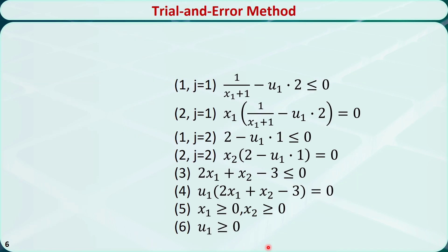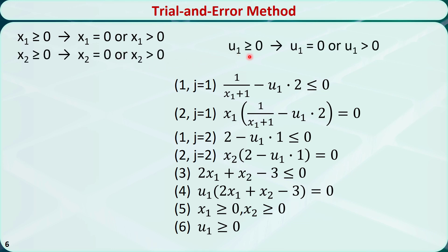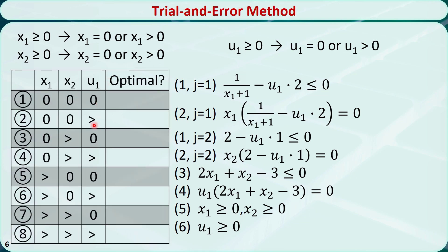After we get all these KKT conditions, let's see if we can find the optimal solution. Using conditions 5 and 6, we can split the problem into some subproblems. For example, x1 greater than or equal to 0 can be split into two cases: x1 equal to 0 and x1 greater than 0. We can do the same for x2 and u1, giving us a total of 8 combinations or scenarios. For the first combination, x1, x2, and u1 are all equal to 0. This condition changes to 1 less than or equal to 0, which is a contradiction, so this combination is not optimal.